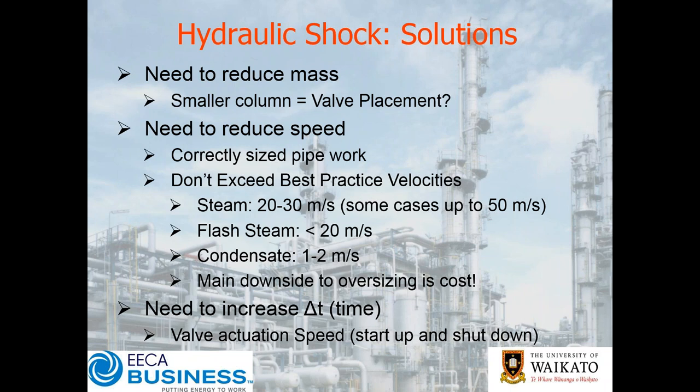The other way to get our force number down is to increase our delta T — in other words, increasing the time by slowing down the valve actuation speed. It's very important on startup and shutdown: do we just shut things off in a hurry, or do we let things cool down and slowly wind down? It's very important with steam and condensate systems to be careful in setting and tuning your ramp rates both on startup and shutdown.